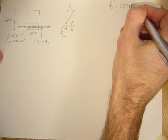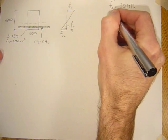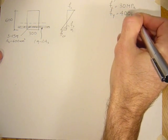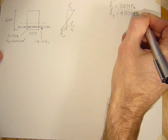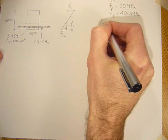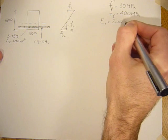We're saying that the 28-day compressive strength F'C is 30 MPa, and the F yield of the rebar is 400 MPa. And the modulus of elasticity of steel is always 200,000 MPa.